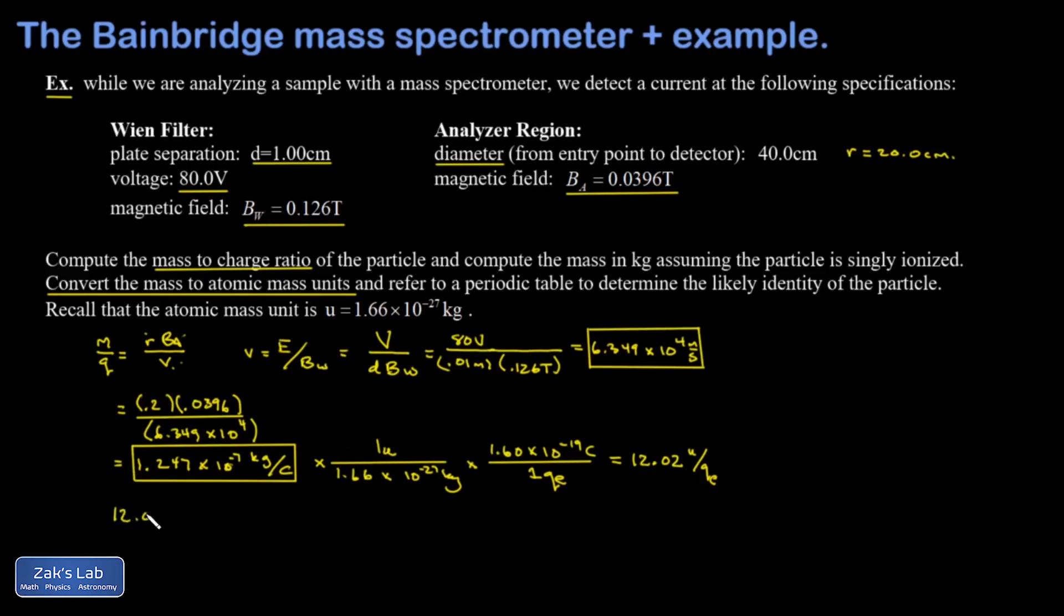Now I'm going to take 12.02 atomic mass units per elementary charge and multiply it by the charge on this particle. We're told to assume the particle has been singly ionized, and that means its charge is one elementary charge. I cancel those out. And I find that the mass of my particle is 12.02 atomic mass units.